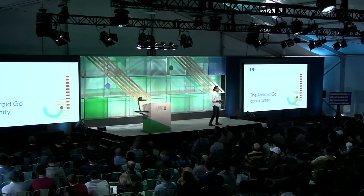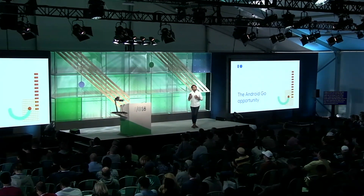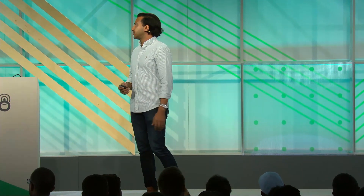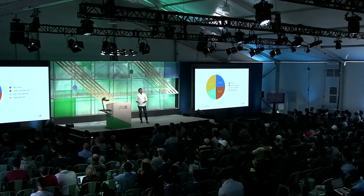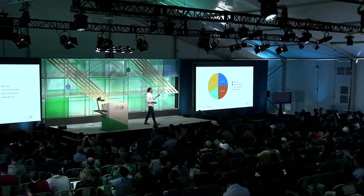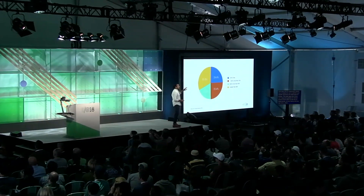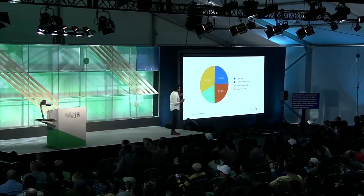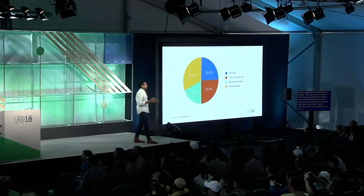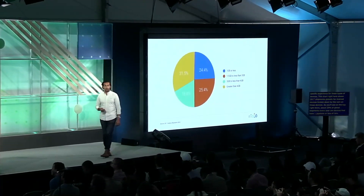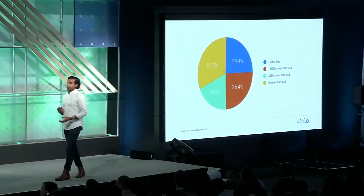I'm really proud of all the work we've accomplished so far over the past year. Let's dive into the opportunity around why it matters for you to optimize your experience for these types of devices. This chart shows 2017 shipments globally for Android devices broken down by RAM. About 25% of global shipments every year are devices that have one gigabyte of RAM or less — that represents about 300 million devices in the market currently.